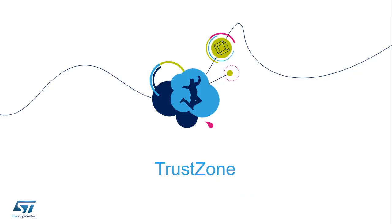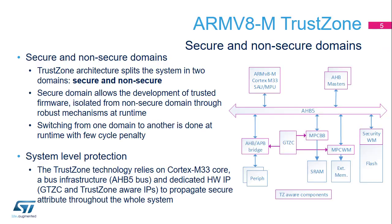Let's take a closer look at the details of the TrustZoneM technology. ARM V8M architecture introduces TrustZoneM technology that allows the split of firmware into secure and non-secure domains at runtime level. Switching from one domain to the other is done with few cycle penalties. As an example, the secure domain may provide secure services based on cryptography to the user application running in the non-secure domain.